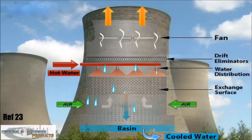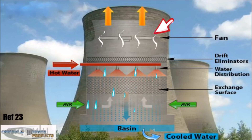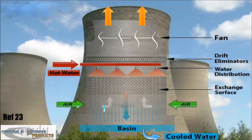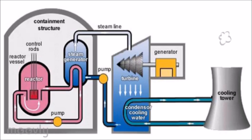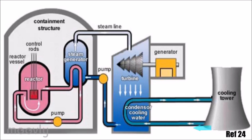Large volumes of airflow, induced by the fan, through the heat transfer medium help to increase the rate of evaporation and the cooling capacity of the tower. The cooled water remaining after evaporation drops into the collection basin and is returned to the reactor's condenser.